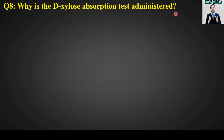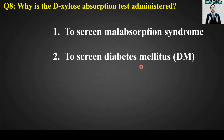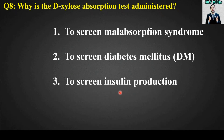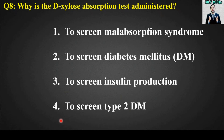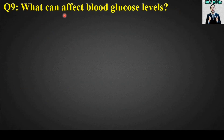MCQ number eight: Why is the D-xylose absorption test administered? Options are: to screen malabsorption syndrome, to screen diabetes mellitus, or to screen type 2 diabetes mellitus. The right answer is option number one — the D-xylose absorption test is administered to screen malabsorption syndrome.